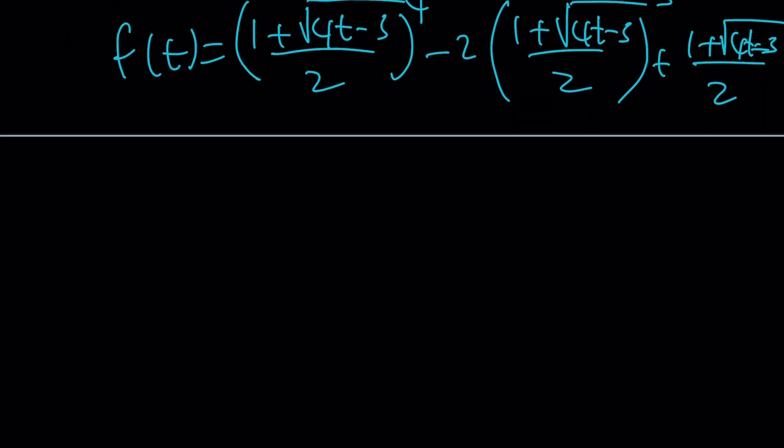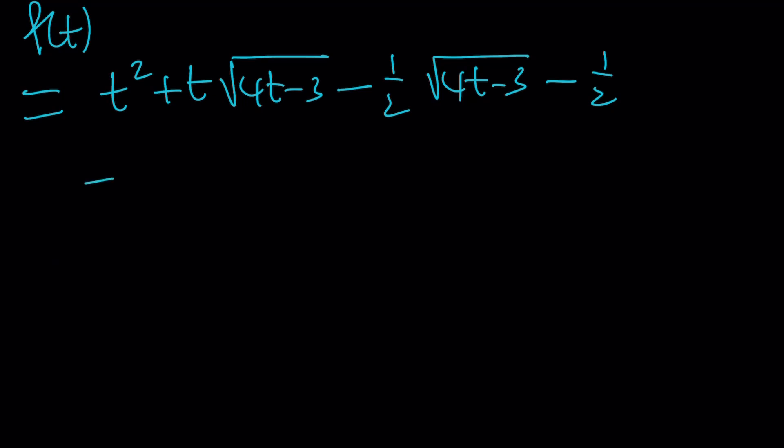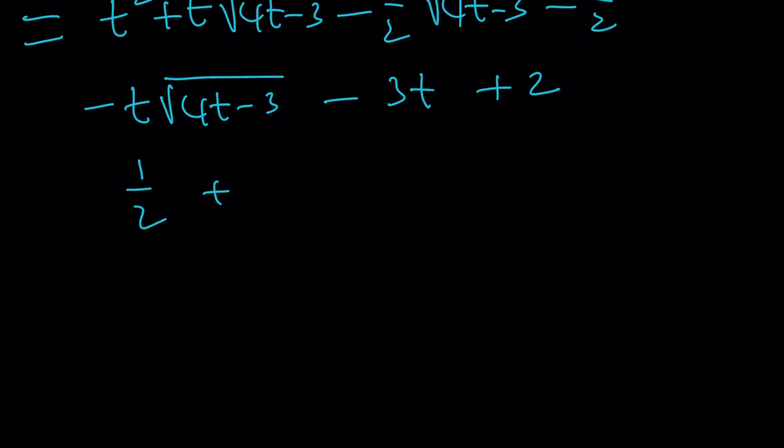Now if you simplify this expression, don't worry I'm not going to give you all the steps, but if you do each one of these I'll show you each one separately. So f(t) is going to look like this. The top one, I mean the first one is going to be the fourth power. You're going to get t² + t times the quantity (4t - 3), obviously certain things are going to simplify here, minus one half times the radical minus one half. And the second one is going to be minus t times the square root of (4t - 3) minus 3t plus 2. And the third one, which is the same thing itself, I can kind of add it as one half plus one half times the radical. I just separated it into two pieces.